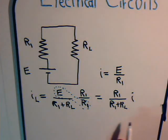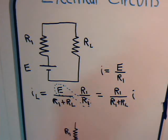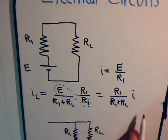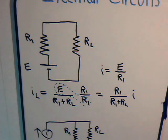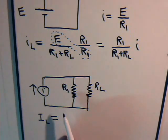Now look at this expression — we've seen this before, when you have two resistors that are in parallel like this, and there's a current going into this parallel arrangement of resistors. The current that flows through resistor L in this circuit, where we have these two resistors in parallel supplied by a current source I, is determined by the current divider principle.